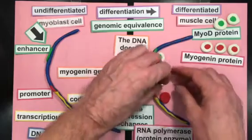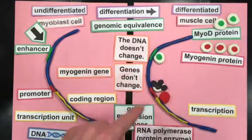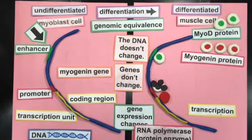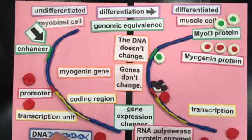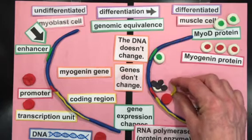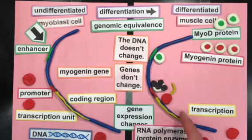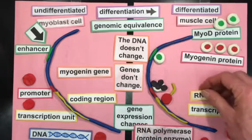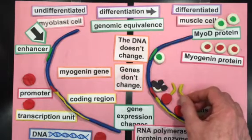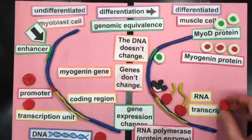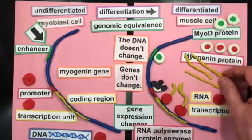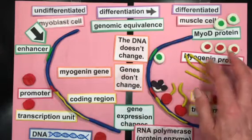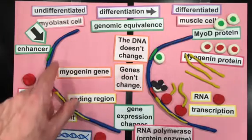All transcription factors function the same way — they all function to regulate transcription of the transcription unit by RNA polymerase. All cells have RNA polymerase. The difference between the myoblast and the differentiating muscle cell is that RNA polymerase is bound and transcribing the gene in the differentiating muscle cell. As the RNA polymerase moves down the gene, it copies the DNA into RNA during a process called transcription. The RNA gets longer until it reaches the end, where the RNA is released and the RNA polymerase is released. Here are full-length RNAs made from transcribing the DNA of this gene.